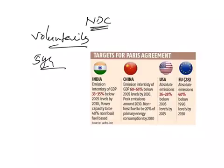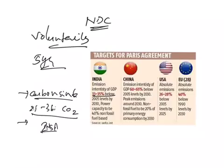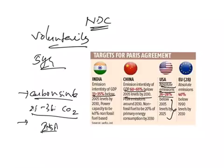India's Intended Nationally Determined Contributions include a reduction in the emissions intensity of its GDP by 33-35% by 2030 from 2005 levels. India has also pledged to create an additional carbon sink of 2.5 to 3 billion tons of CO₂ equivalent through additional forest and tree cover by 2030. India will also anchor a global solar alliance for countries located between the Tropic of Cancer and Tropic of Capricorn. For the USA, the INDC was to reduce absolute emissions by 26-28% below 2005 levels by 2025. For China, it is 60-65% below 2005 levels, and for the European Union it is 40% below 1990 levels.